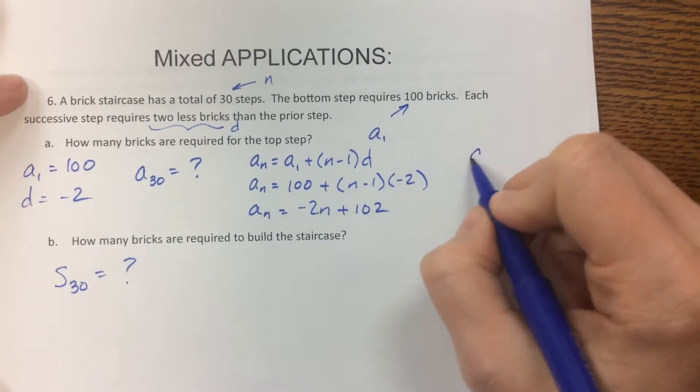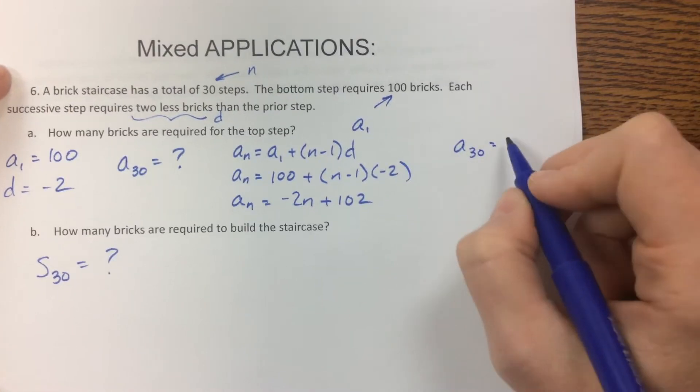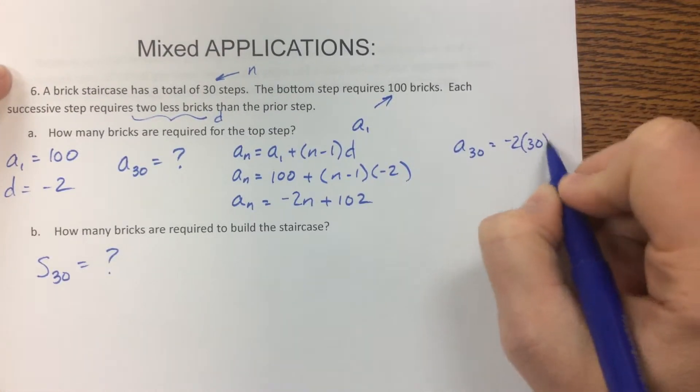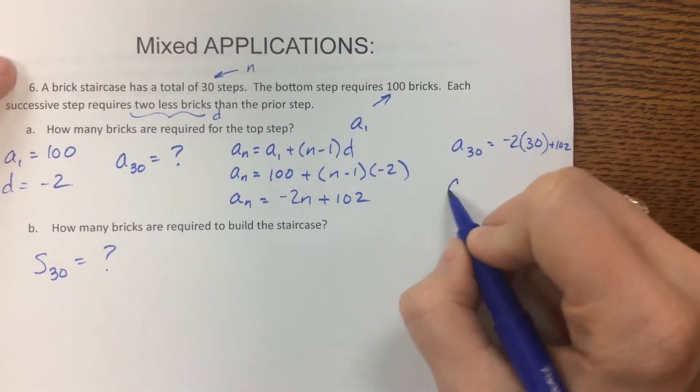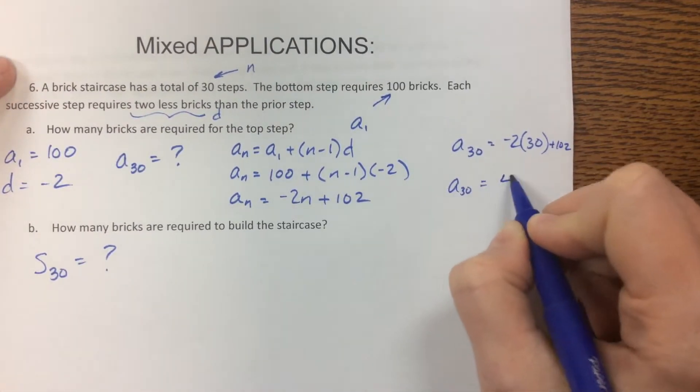So now I need to know, well, what's a sub 30? I ran out of space, but do you see what I'm trying to do? And this, a sub 30, is equal to 42.